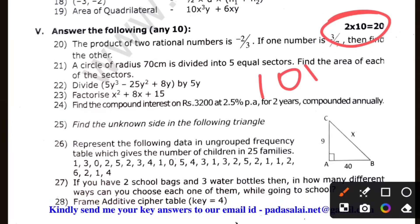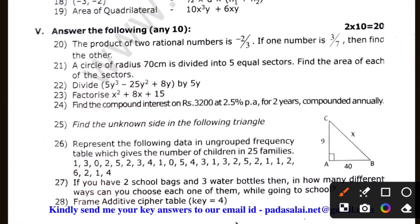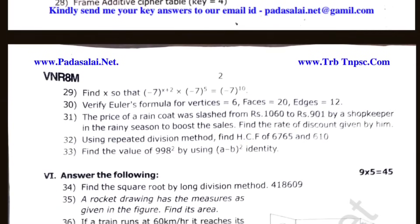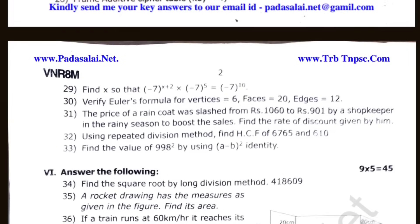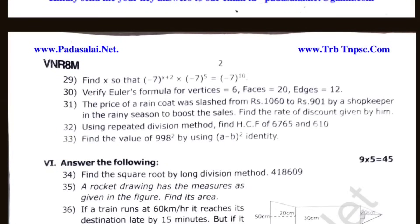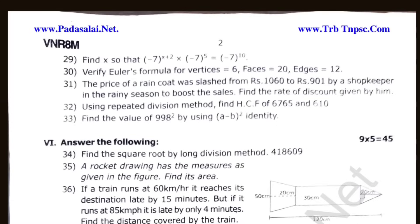This is 10 x 2 is equal to 20. Let's use 20 x 2 is equal to 16 x 2. We just need to remove this. Find x. Using the repeated subtraction method, find the HCF of 6765 and 610. Find the value of 1998 squared using the identity (a minus b) whole square.